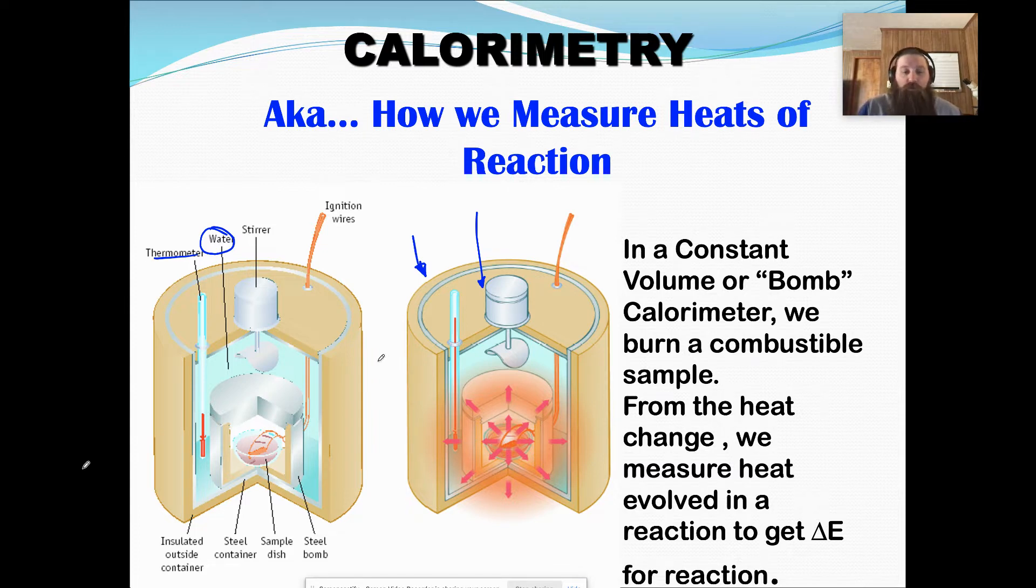Now, if we're doing a true bomb calorimetry, there will be two ignition wires that go down into this sample dish. So what you do is you load your sample, you put this top on, you fill this thing up with water, you put the second top on, and then you hit the ignition wires. Ignition wires ignite whatever is in the sample disk. It heats up, which we can see right here. It explodes, it burns, whatever it is. And the heat from that reaction is absorbed by the water, and you can see that there is a change in the temperature. And that's how we do bomb calorimetry.